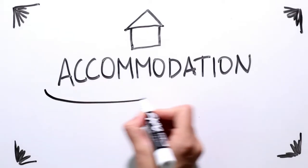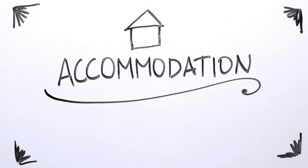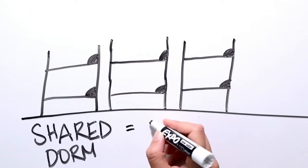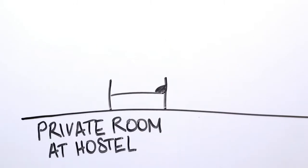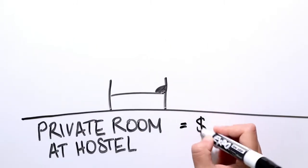Now for some specifics, starting with accommodation. At a hostel, a bed in a shared dorm room is about $30.00 a night. And a private room is approximately $100.00 a night.